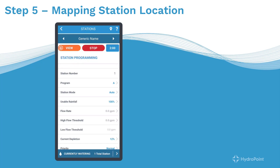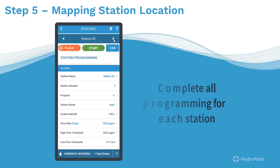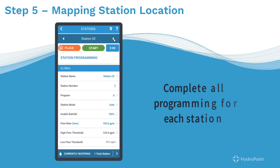Once you've completed programming this station and placing the station location pin, use the advance arrow at the top to advance to the next station. That will take you to Station 2, where you'll repeat the process until you've programmed every station on your controller.